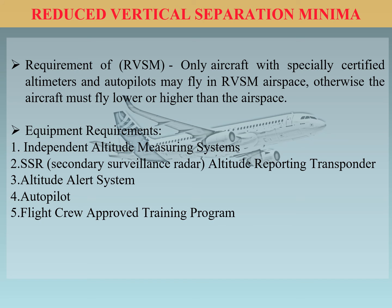The requirement for RBSM is that only aircraft with specially certified altimeters and autopilots may fly in the RBSM airspace; otherwise the aircraft must fly lower or higher than this airspace. Equipment requirements include independent altitude monitoring systems, SSR (Secondary Surveillance Radar) altitude reporting transponders, altitude alerting systems, autopilot, and flight crew approved training programs. The flight crew must be RBSM-type rated.